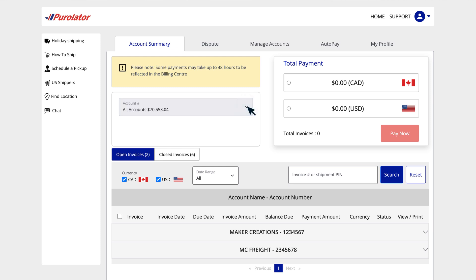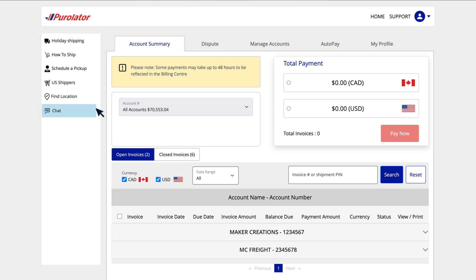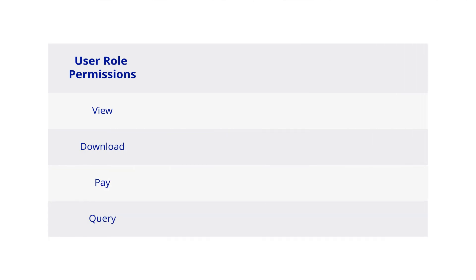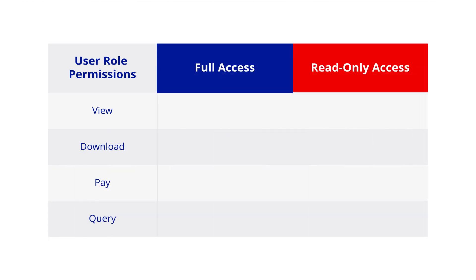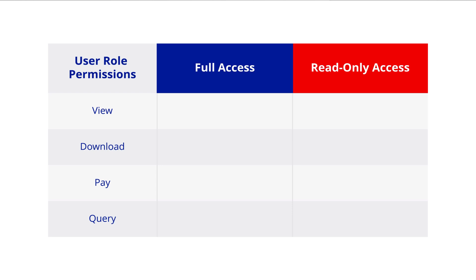You can also use the sidebar to access shipping tools, such as scheduling a pickup or finding a location, or chat with us if you need help. Depending on your user role, you will have either full access or read-only access. Full access allows you to view, download, pay, and query invoices. If you have read-only access, you can only view and download invoices.